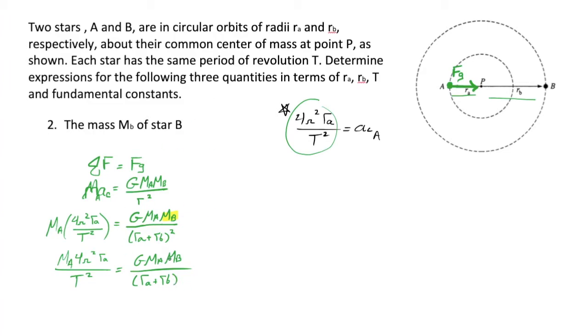Yeah, so what I'm going to do is divide by GMA, and at the same time, I'm going to multiply both sides by RA plus RB squared. And here's what the result of that is going to look like. We're going to have RA plus RB squared times MA, 4 pi squared RA over the T squared that's already there. And don't forget, we're going to divide both sides by GMA.